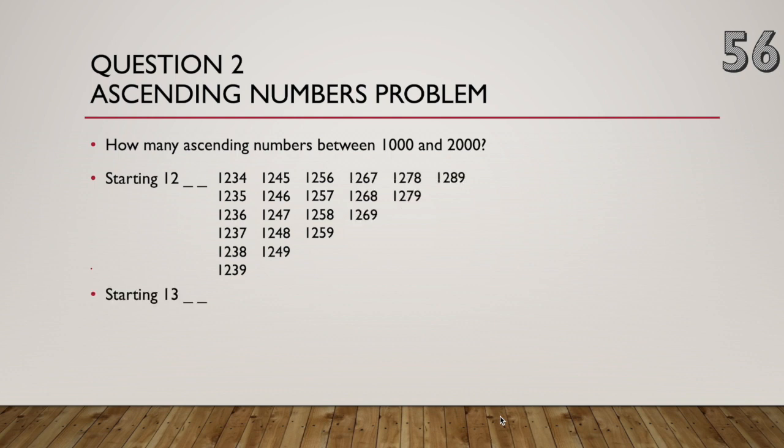If we now look at solutions starting 1, 3, so 1,300 and. Well, that means the next digit's got to be at least four. So starting with four, there are five solutions. Starting with five, there are four solutions and so on.